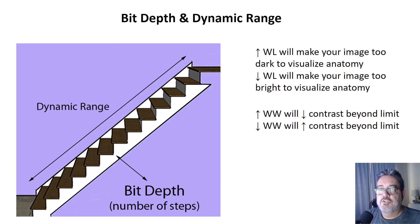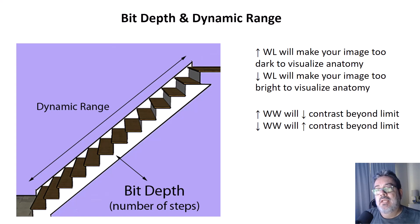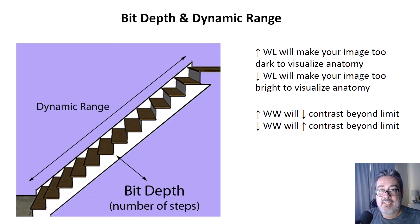Let's continue our discussion on data clipping and how that relates to bit depth and dynamic range. Manipulating the brightness and contrast too much will remove data from your image set. Increasing the window level will make your image too dark to visualize the anatomy — you could manipulate it so much that the screen is entirely black.